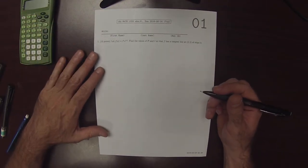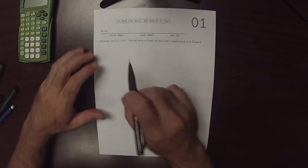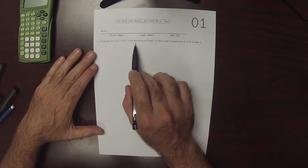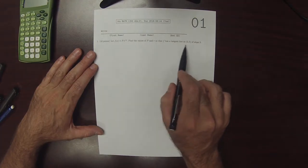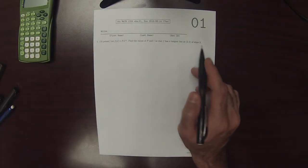Okay, this is the key for written homework 1. So it reads, let f of x be this exponential function. Find the values of p and r so that f has a tangent line at 2, 5 of slope 3.